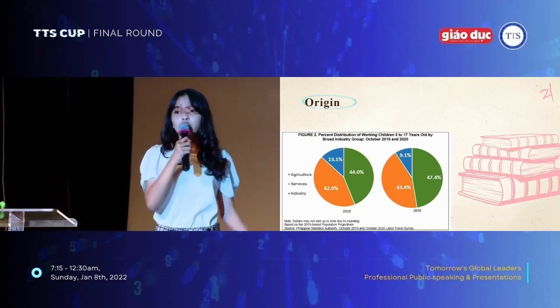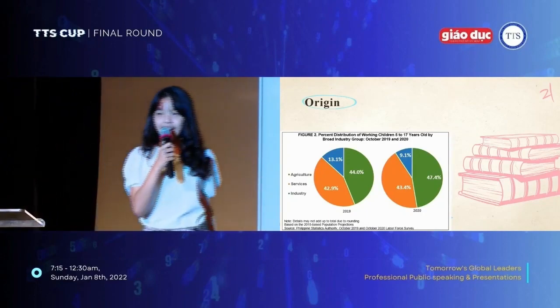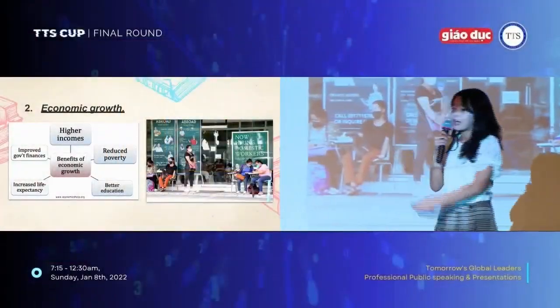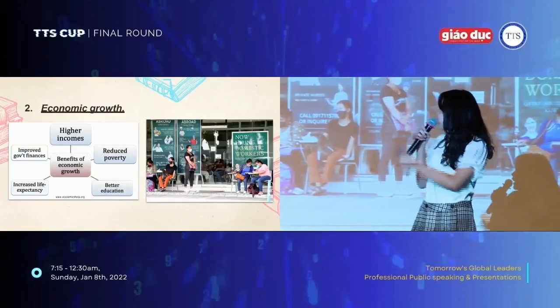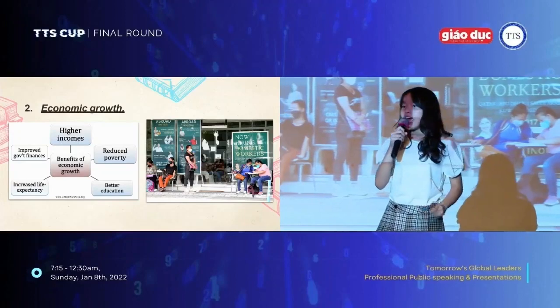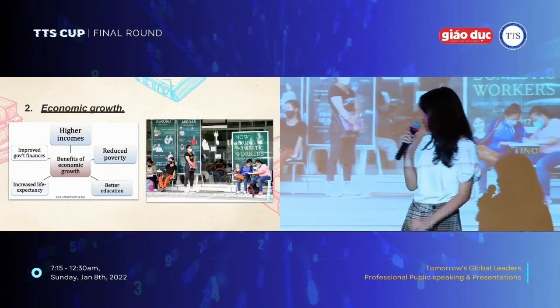From these two pie charts, we can conclude that throughout these two timelines, there isn't much of a significant difference due to the lack of change in the percentages — some decreased and increased, but only slightly. One of the main benefits of economic growth is higher incomes, reduced poverty, and better education for children, and these are the main factors that can limit child labor.